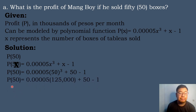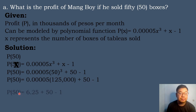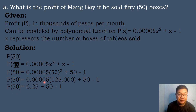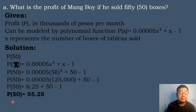We will simplify. P(50) = 0.00005 × (50)³. Multiplying 50 by itself three times: 50 × 50 × 50 = 125,000. So P(50) = 0.00005 × 125,000 + 50 − 1. Then 0.00005 × 125,000 = 6.25. Bringing down: P(50) = 6.25 + 50 − 1 = 55.25.